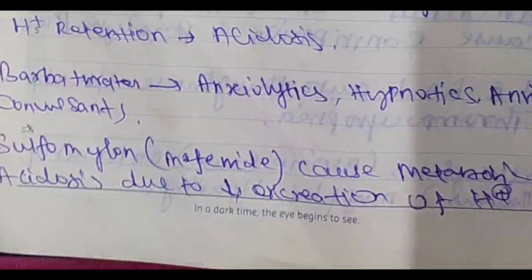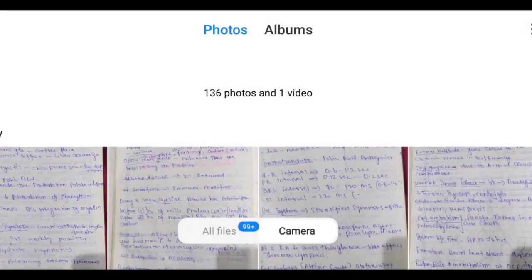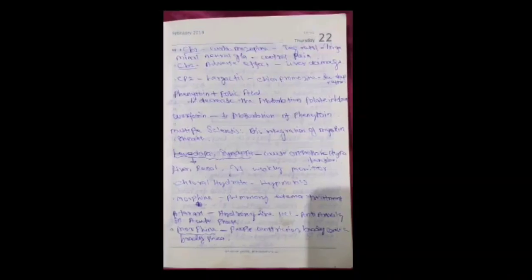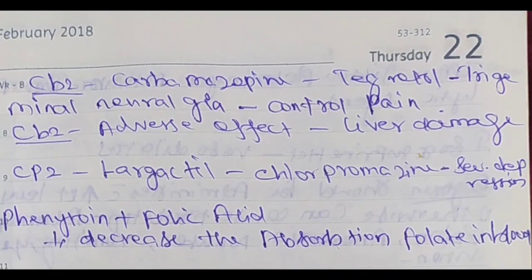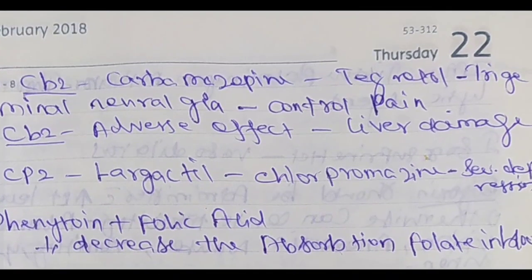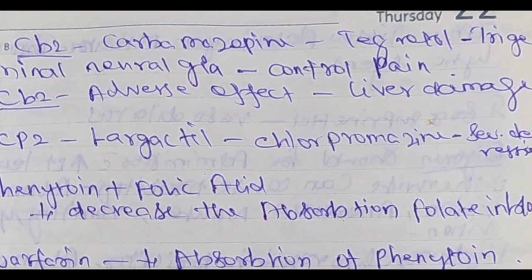Barbiturates act as anxiolytics, hypnotics, and anticonvulsants. Carbamazepine — also called Tegretol — is used for trigeminal neuralgia to control pain. Adverse effect of carbamazepine is liver damage.